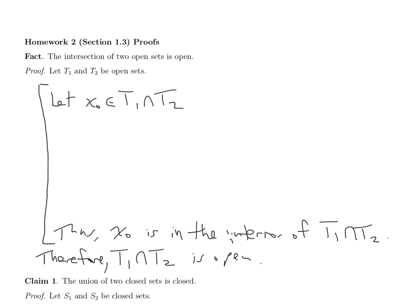I realize that I have to use my hypotheses because I really have nothing else to go on. The fact that X0 is in T1 intersect T2 means, of course, that X0 is in T1 and also X0 is in T2.